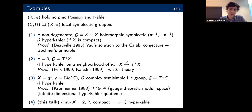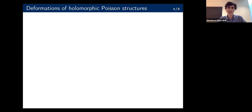What I have been able to do is closer in spirit to Feix's proof using twistor theory, and generalizes the second example to non-zero Poisson structures in complex dimension two. Before I explain this construction, I need to review deformations of holomorphic Poisson structures.